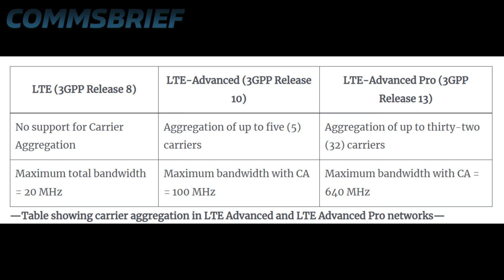LTE Advanced Pro networks take carrier aggregation to another level. As shown in the table, they can use up to 32 carriers. That means if you use a 20 MHz channel, 20 times 32 equals 640 MHz — so with carrier aggregation in LTE Advanced Pro networks you can have a maximum bandwidth of 640 MHz. That is one gigantic channel.